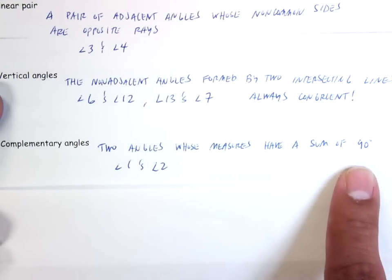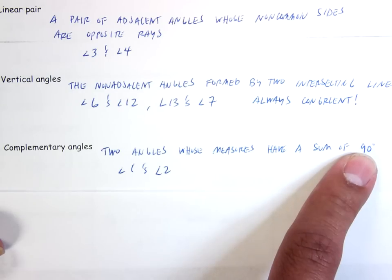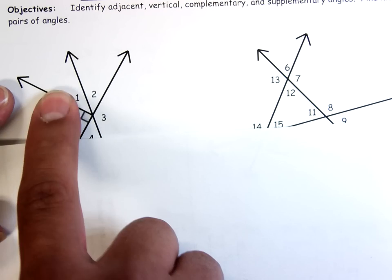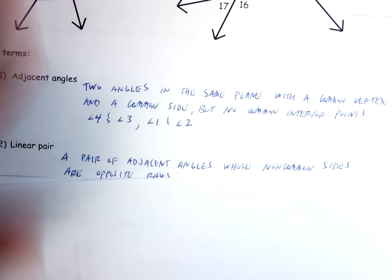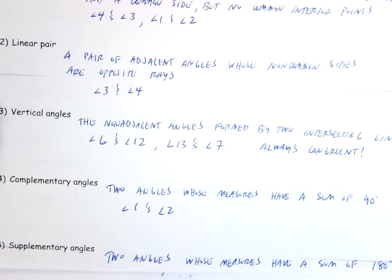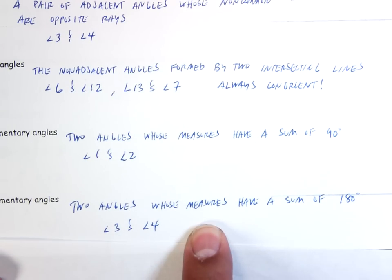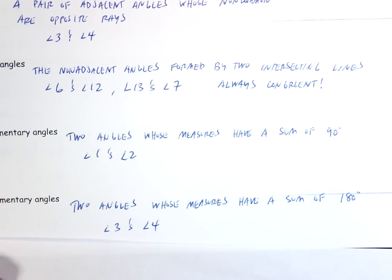Complementary angles — two angles whose measures have a sum of ninety degrees. So angle one plus angle two must be ninety degrees; those are complementary angles. Supplementary angles — two angles whose measures have a sum of one hundred and eighty degrees. So angle three and angle four, like we already talked about as linear pairs, are supplementary — they add up to one hundred and eighty degrees.